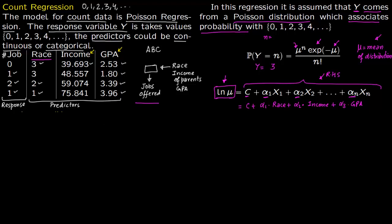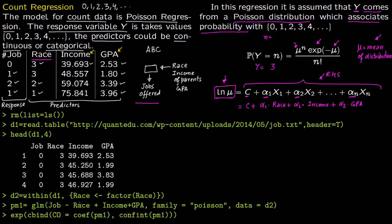So let us do this in R. First you clear the memory, then you read your data set using read.table — this is the address and file name, header is true. Let us see the first four lines: row 1 has job offered as 0, race 3, income 39.693 (scaled by dividing by 1000), and GPA of the student. Row 2: job is 0, race 3, income 45.250, GPA 1.99, and so on.